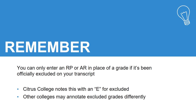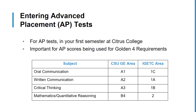Other colleges may annotate this differently, so be sure to contact the college if you have any questions. For students that completed an AP test in high school, you can enter these in your first semester at Citrus College. This is especially important if the course is being used to satisfy a Golden 4 requirement.